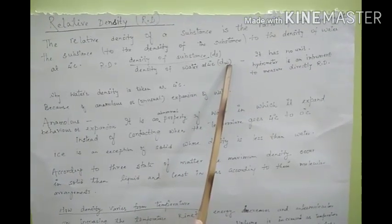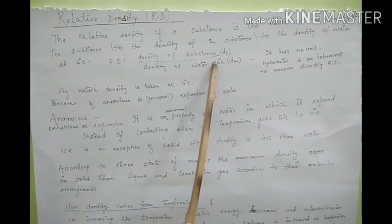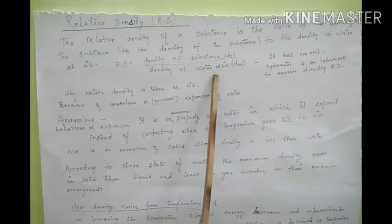That means density of water maximum at 4 degrees is 1 gram per centimeter cube.